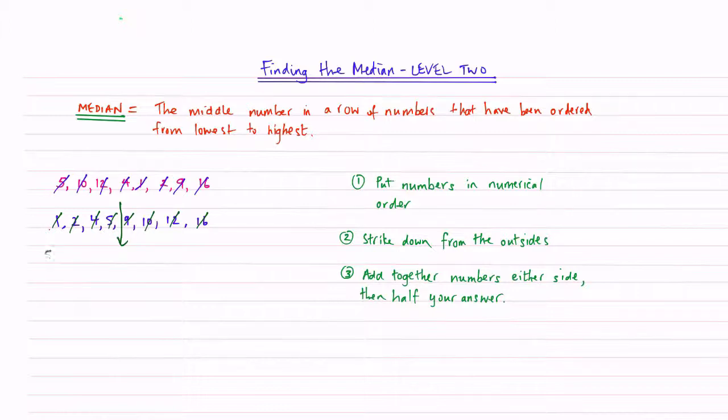So 5 plus 9 gives me 14. And then I need to half this or divide by 2. So 14 divided by 2 is 7. And so my median of these numbers is going to be a 7.